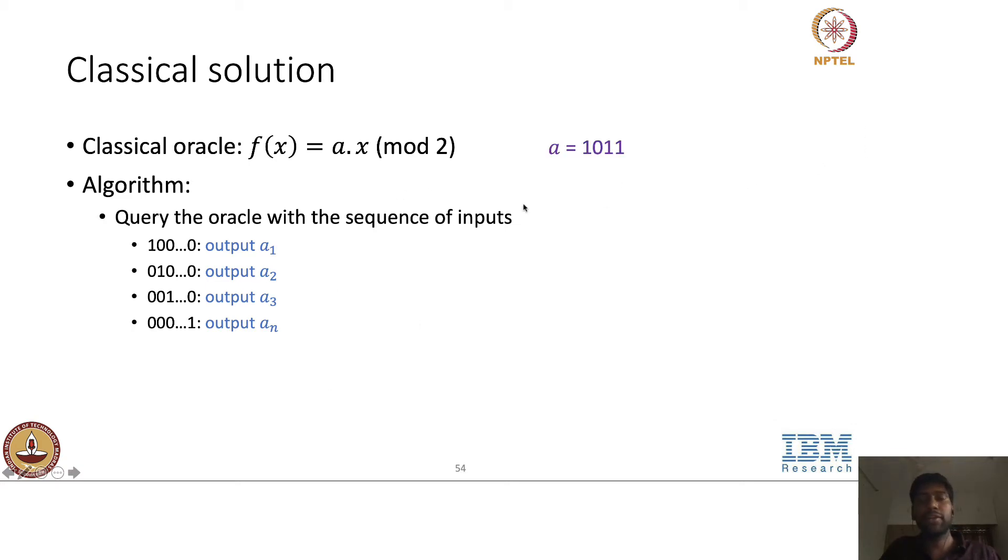Just to give an example to again reiterate what I mentioned earlier, let's just assume that the a that's embedded in it is 1011. Let's assume that n is 4 and then a is 1011. So we query the oracle with 4 inputs. We query first with 1000, 0100, 0010 and 0001. So 1000 dot this will give the first bit 1 and then 0100 will give the second bit that's 0, 0010 will give the third bit that's 1 and 0001 will give the fourth bit that's 1.